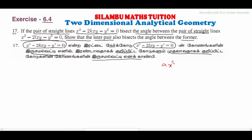The general condition: ax² + 2hxy + by² = 0 passes through the origin. For the angle bisector, the condition is: x² - y² divided by (a - b) is equal to xy divided by h.